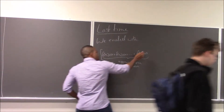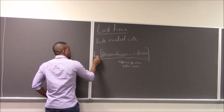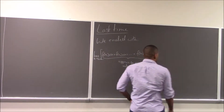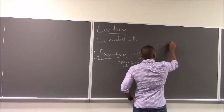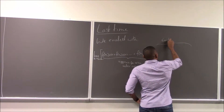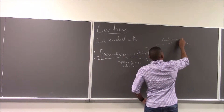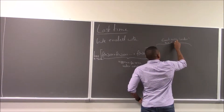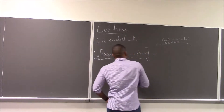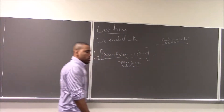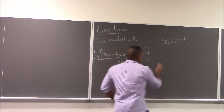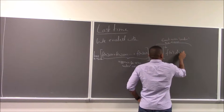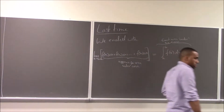So if we take the limit as n approaches infinity, we get what we call the exact area under the curve. We had a notation for that — this symbol which we call the definite integral of f of x.